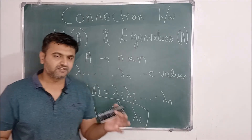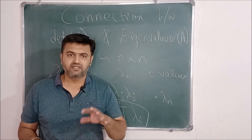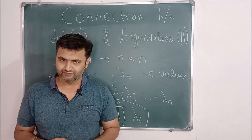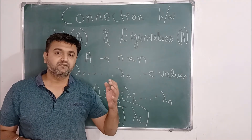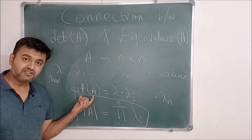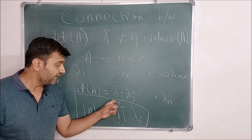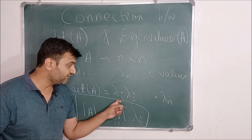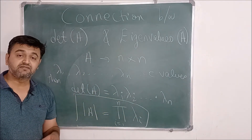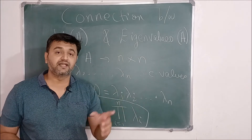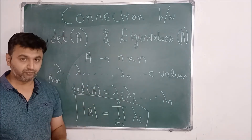Based on this result, I once asked a two-mark question: prove that a matrix is invertible if and only if all the eigenvalues are non-zero. It's very simple using this property because a matrix is invertible if and only if the determinant is non-zero. The determinant is non-zero means the product of eigenvalues is non-zero, and a product is non-zero means each of them has to be non-zero — because even if one eigenvalue becomes zero, the determinant becomes zero. So the matrix is invertible if and only if all the eigenvalues are non-zero. That's another result one can derive from this property.